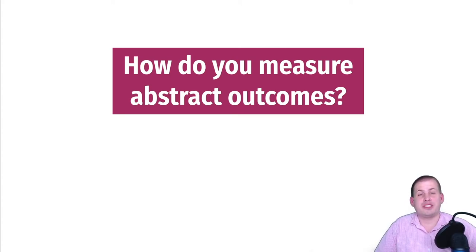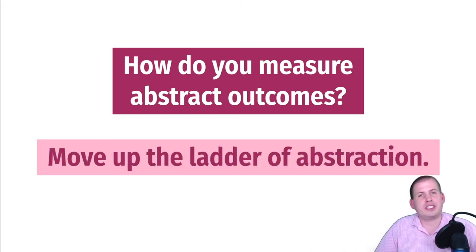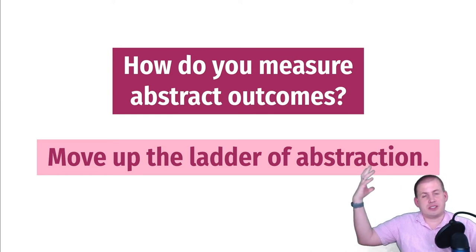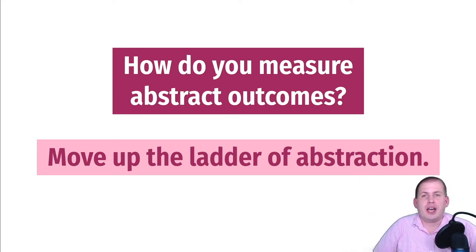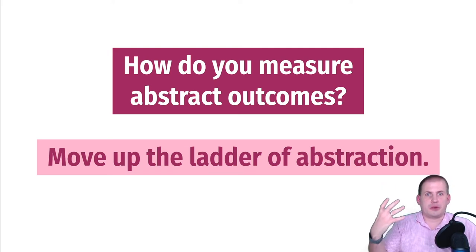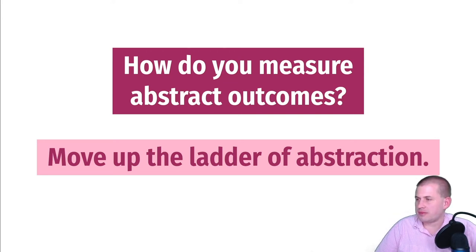How do you figure out what 'increased commitment to school' looks like? What we're going to do is use a concept called the ladder of abstraction. We want to build a ladder of abstraction for these loftier, more difficult concepts - these outcomes we're trying to measure - and then find the right level of abstraction that feels appropriate, that feels like we're actually measuring something that is capturing the change we're trying to get at and reflects the change we're hoping to actually cause.